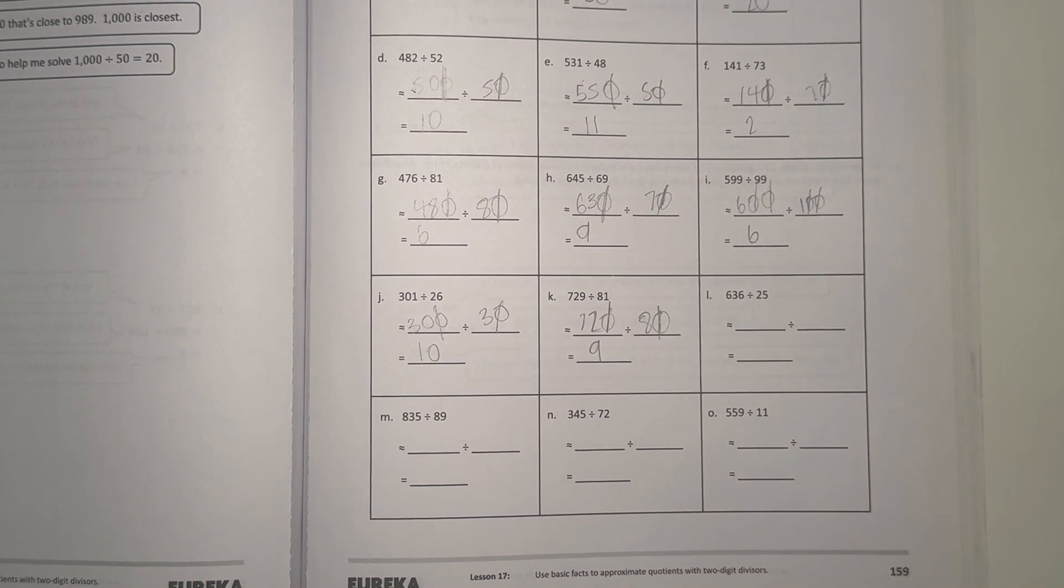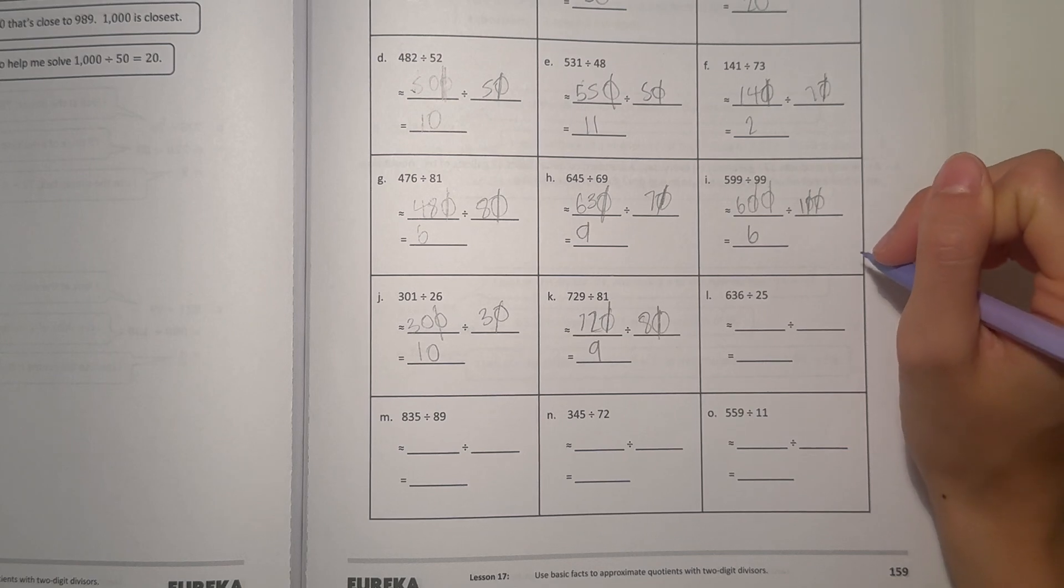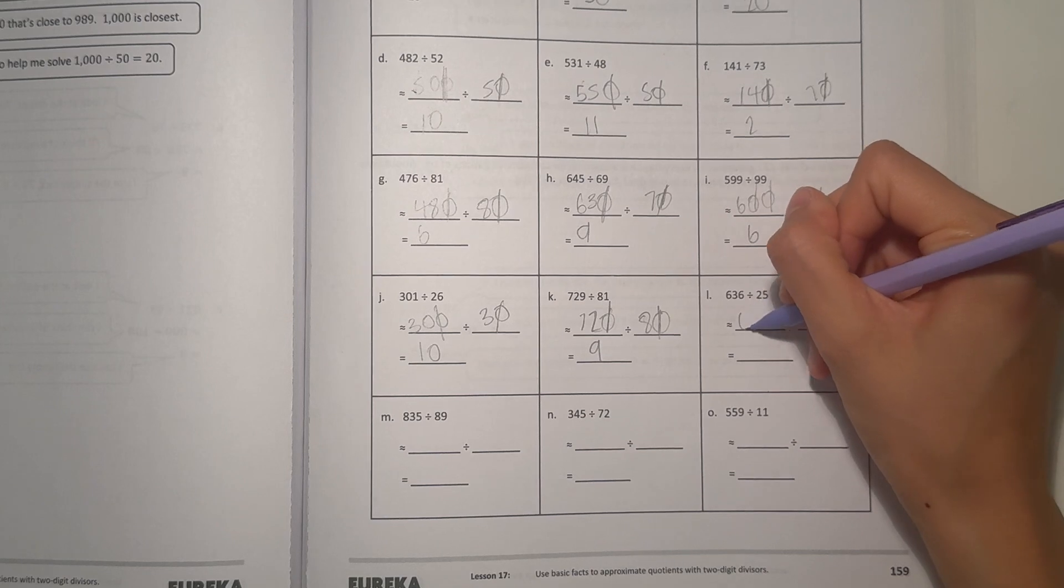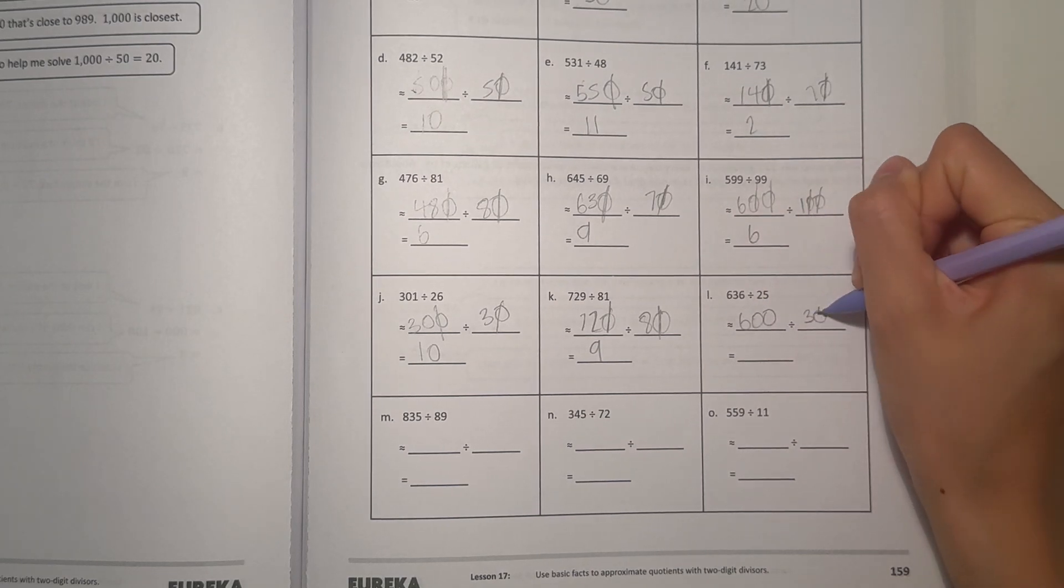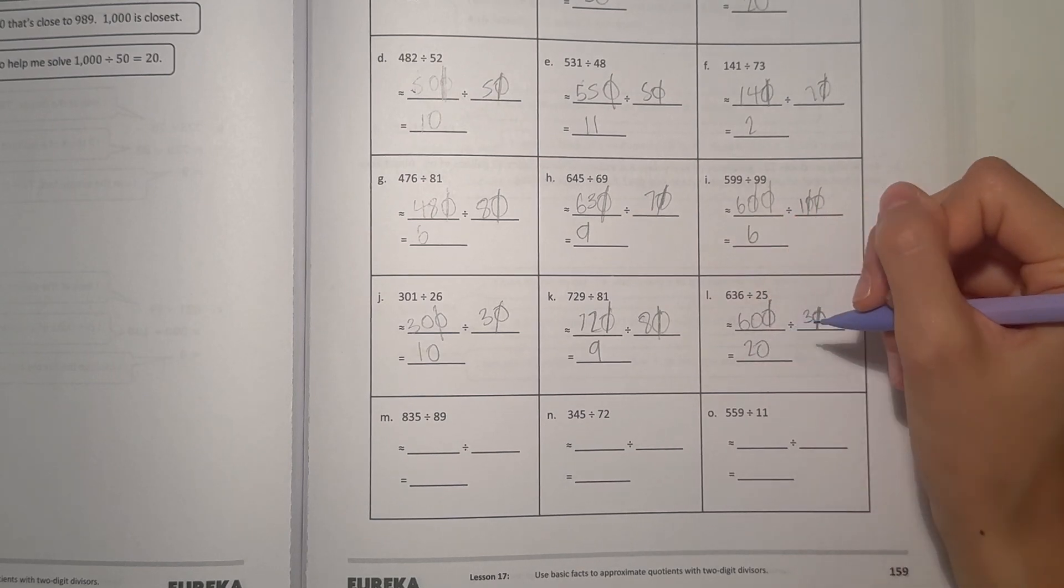All right, and L, 636 divided by 25. 25 rounds to 30. And 636 can round to 600. Cross off the zeros. 60 divided by 3 is 20, so 20 is our estimate.